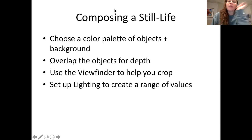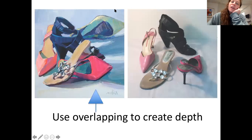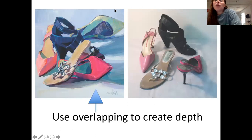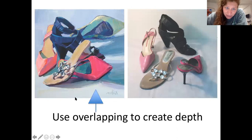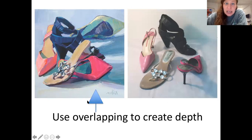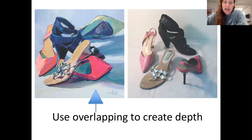Just some examples. When I say use overlapping to create depth — this still life has overlapping, where these four objects in the other one don't really. It has a little more interest to me and more depth as well.